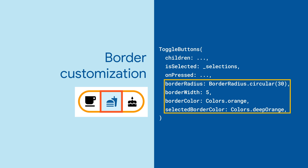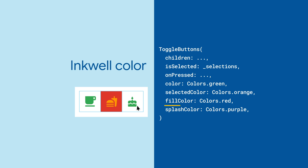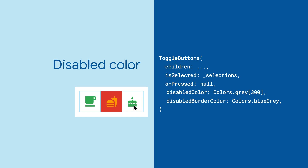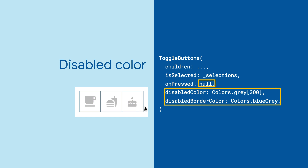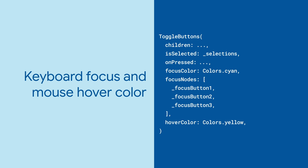You can even set the colors for the inkwell and the highlight color after a long button press. You can also set the color when the toggle button selection is disabled. If your app is running in an environment with a keyboard, you can customize the color to indicate the button is in focus.